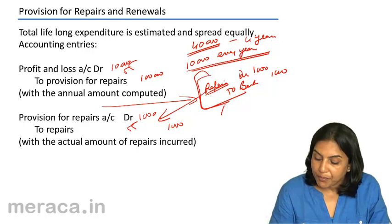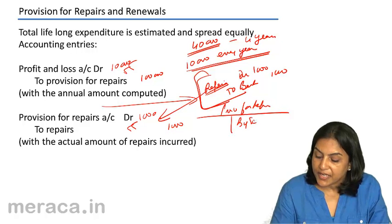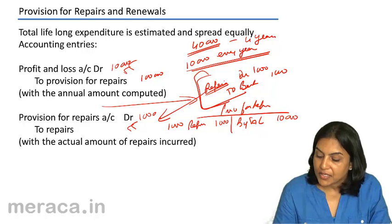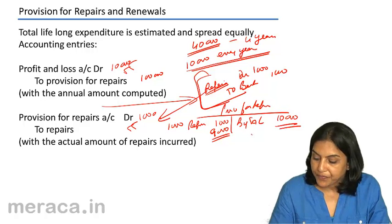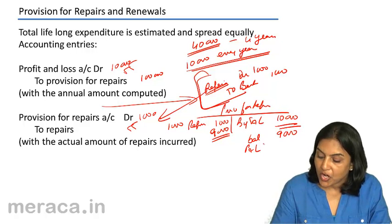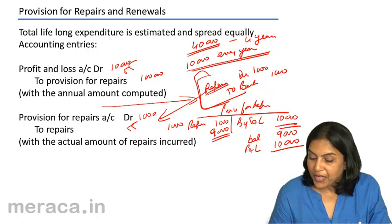Therefore, in the provision for repairs account, we first create a provision in year 1 amounting to 10,000, then charge repairs of 1,000 and have a balance of 9,000, which is carried forward to the next year. If 9,000 is brought forward, again there is a profit and loss charge of 10,000, which is the charge we need every year.